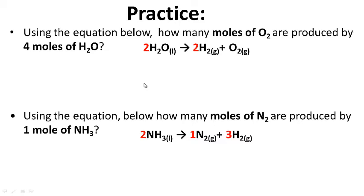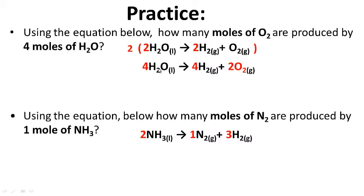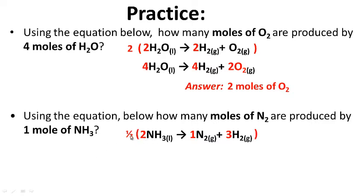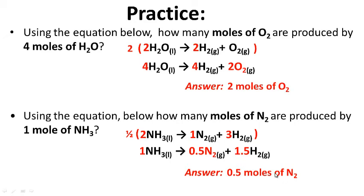Practice — work on these two examples. Using the equation, how many moles of O2 are produced by 4 moles of H2O? Multiply everything by 2 — this gives 4 moles of water, which produces 2 moles of oxygen. Next: how many moles of N2 are produced by 1 mole of ammonia? Multiply the equation by one half — this gives 1 mole of ammonia producing 0.5 moles of N2 and 1.5 moles of H2. The answer is 0.5 moles of N2.